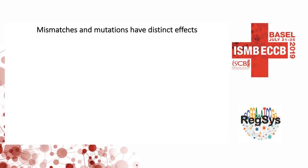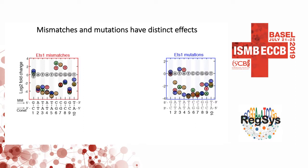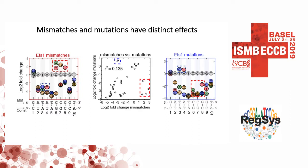Importantly, mismatches and mutations have distinct effects. Looking at the same data plus mutations generated for the same site, mismatches that tend to increase binding don't have the same effect when you look at the corresponding mutations at the same positions — the same base changes don't increase binding. So this doesn't come from base recognition alone, which does play a role, but it's not the only determinant. Similarly, mutations that increase binding don't have the same effect when you look at the corresponding mismatches. Using just mutations as a predictor of mismatch binding gives poor correlation.